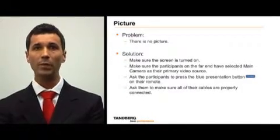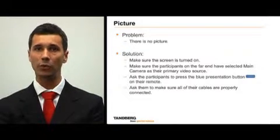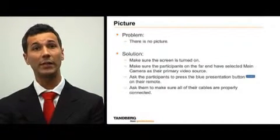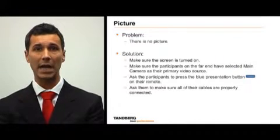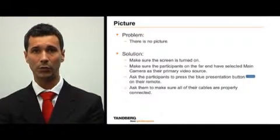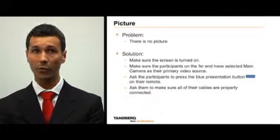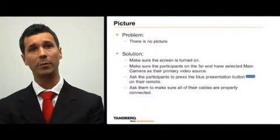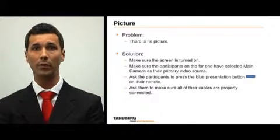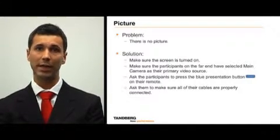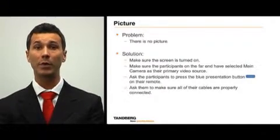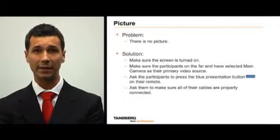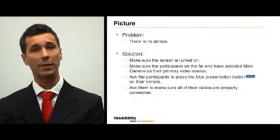Picture. When there is no picture, make sure the screen is turned on and the participants at the far end have selected main camera as their primary video source. If this doesn't solve the problem, ask the participants at the far end to press the blue presentation button on the remote control. Finally, ask the far end to make sure all of their cables are properly connected between their system and the camera.